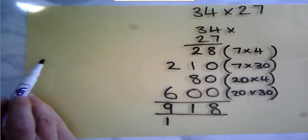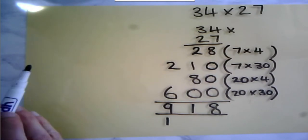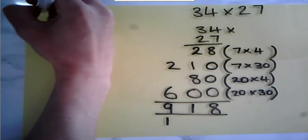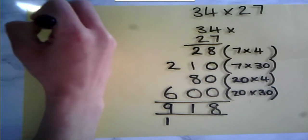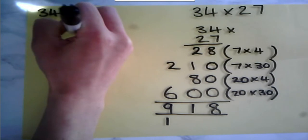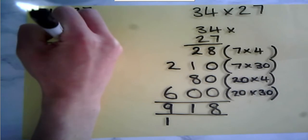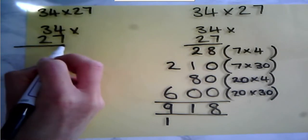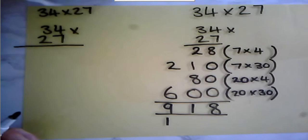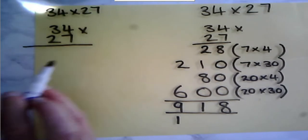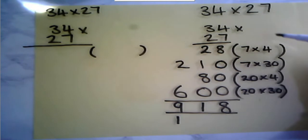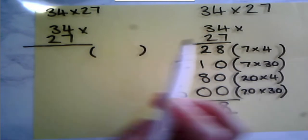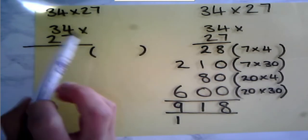I'm going to show you how to do that using the short method, the shorter method. So we've got 34×27, and we set it out in the same way. Equals sign. I only write down two brackets here, because whereas we've partitioned this into four calculations, I'm going to partition this into two different calculations.